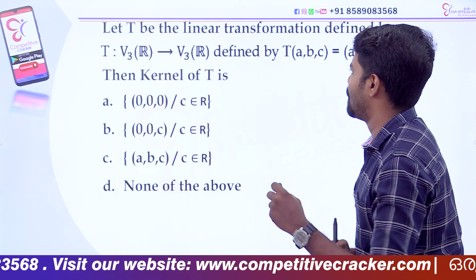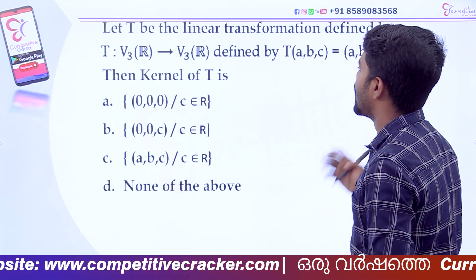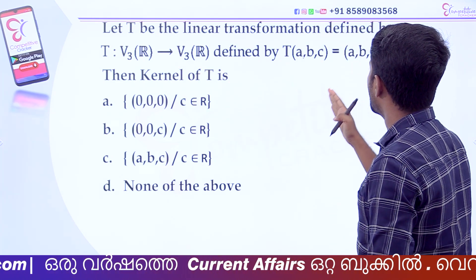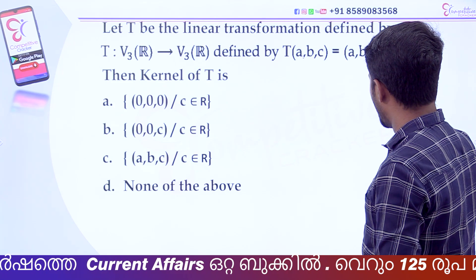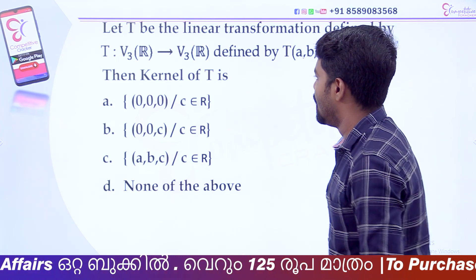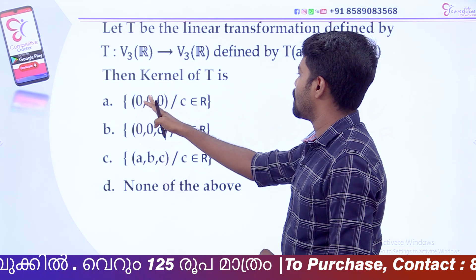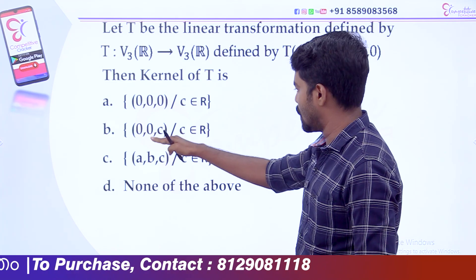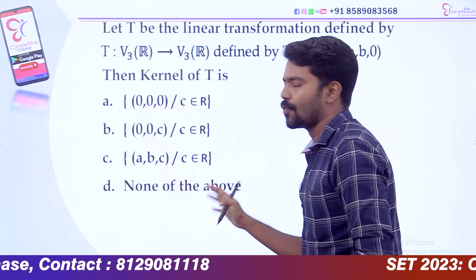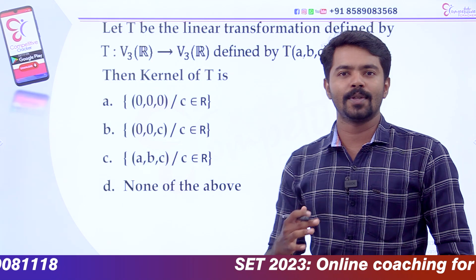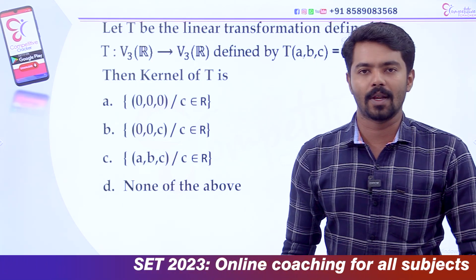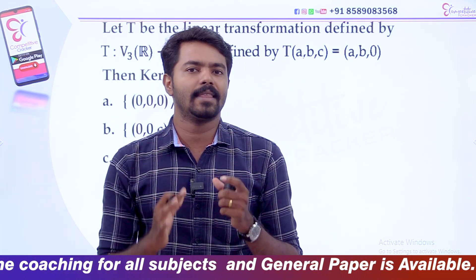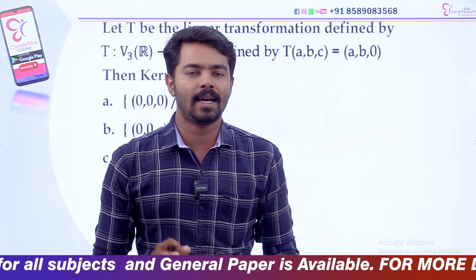Let t be the linear transformation defined by t from V3 of R to V3 of R, defined by t of v, where v equals (a, b, c), equal to (a, b, 0). Then the kernel of T is: set of all ordered triplets (0, 0, 0), where c equals 0, set (0, 0, c), set (a, b, c), or none of the above.